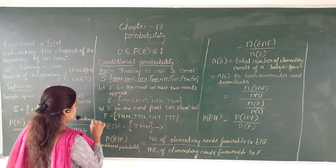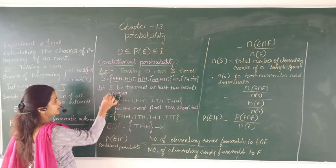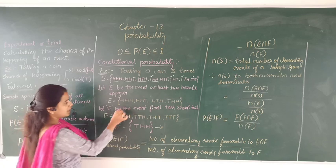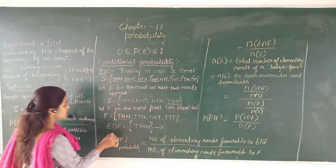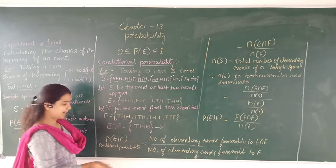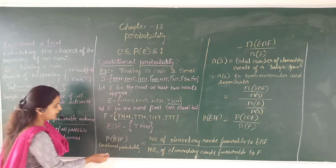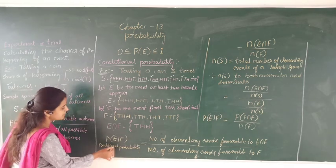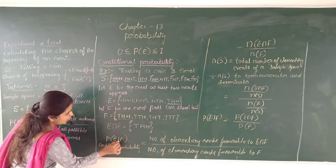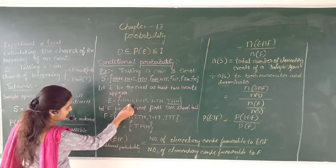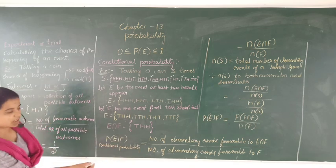Now I am going to take the intersection of events E and F. We have two events, E and F. The only common element between them is tail-head-head. So the intersection E∩F contains the single element tail-head-head. The probability of E given F — that is called conditional probability — depends on the common element between these two events and the number of elementary events favorable to event F.